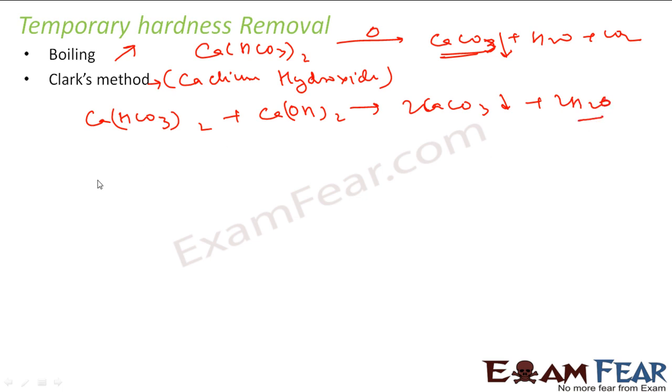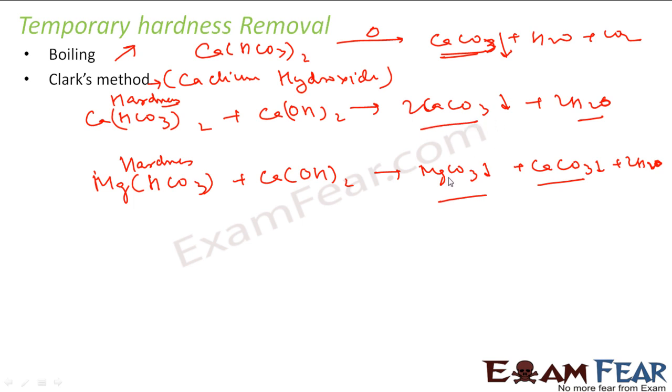Instead of calcium bicarbonate, you might have magnesium bicarbonate as the hardness. In that case also you will mix calcium hydroxide. What you get is magnesium carbonate, calcium carbonate, and 2H2O. In both cases these get precipitated, and thus the water is free from hardness.